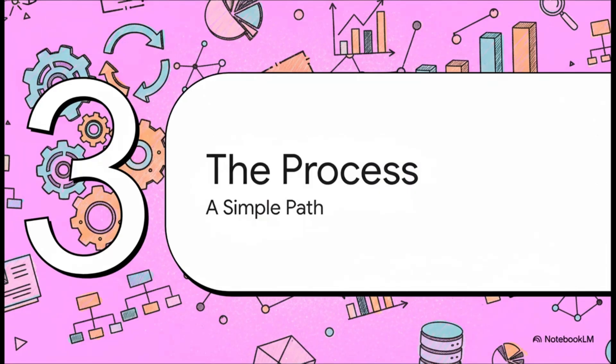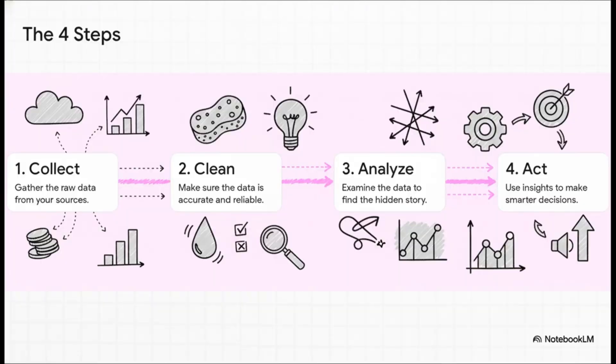So how does all of this actually work? Well, it's not magic, I promise. There's a simple, pretty structured process behind it all. It all breaks down into four key steps. First, you collect the data from all your different sources. Then, and this part is absolutely crucial, you clean it to make sure it's accurate and reliable. Third, you analyze it to find those hidden patterns we talked about. And finally, the most important step of all, you act on what you found to make smarter, data-driven decisions.